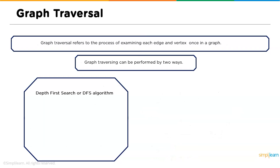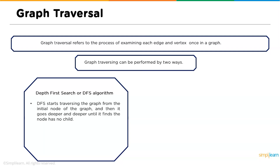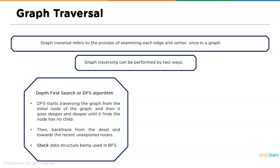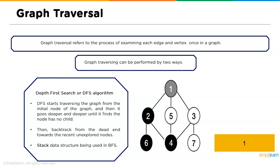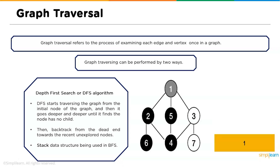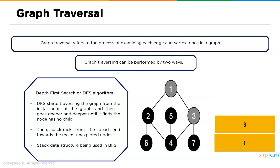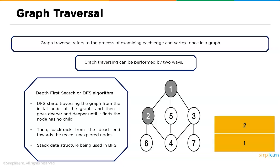Followed by BFS we have the DFS algorithm — depth-first search. DFS starts traversing a graph from the initial node and then goes deeper and deeper until it finds a node with no child, then backtracks from the dead end towards the recently explored nodes. A stack is used for DFS algorithm. If you don't know much about DFS and BFS algorithms, tutorial videos are linked in the description box below.